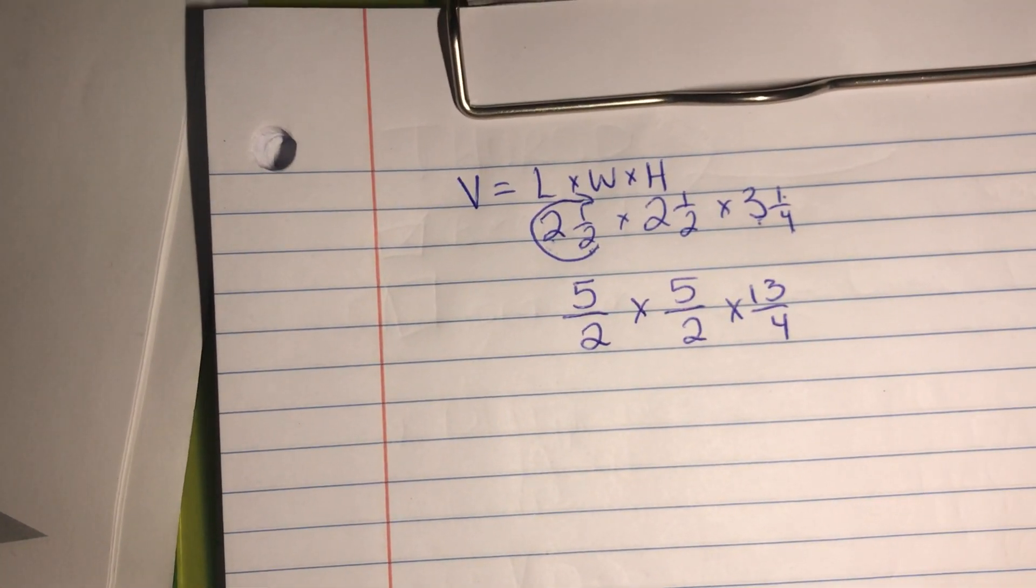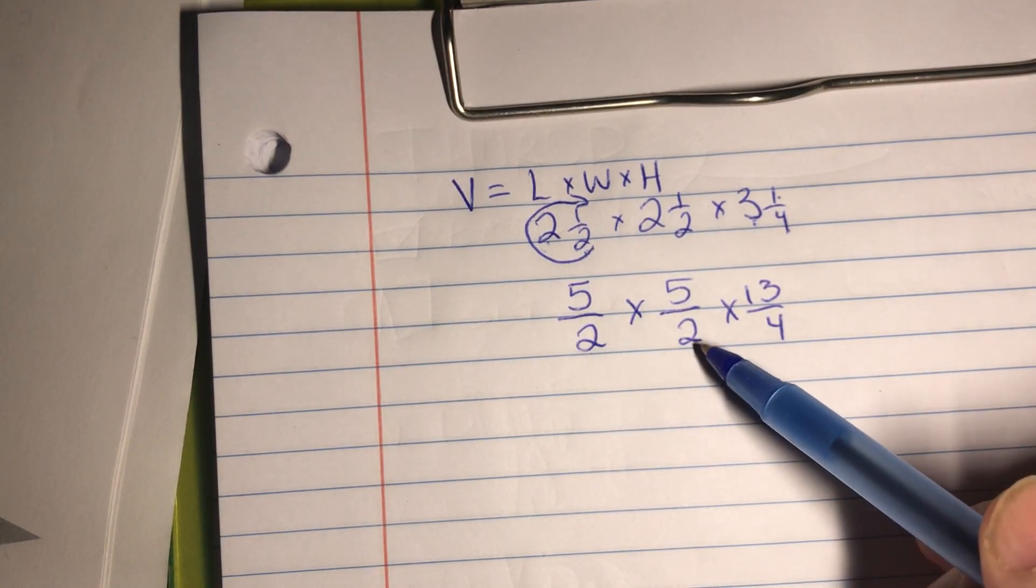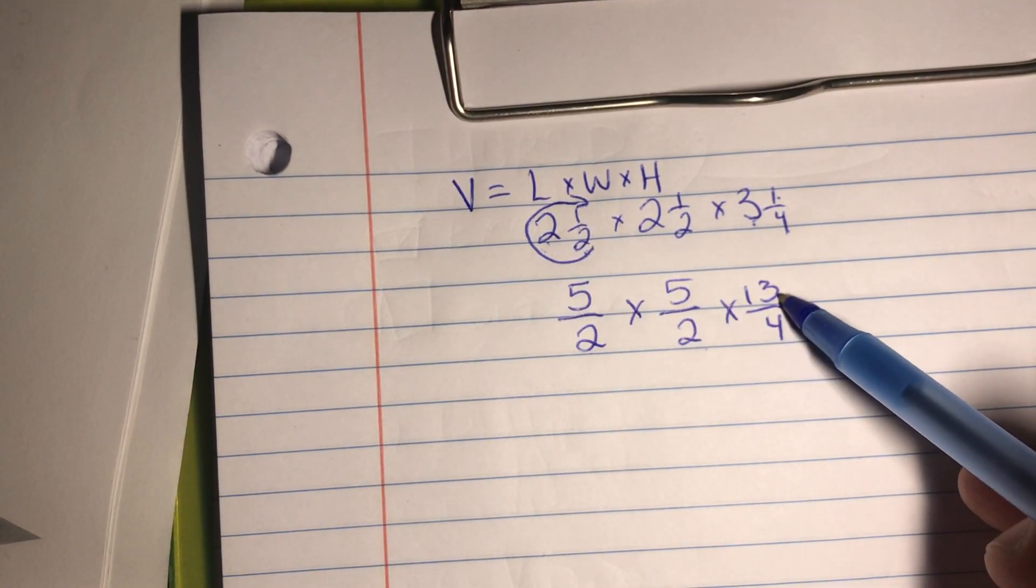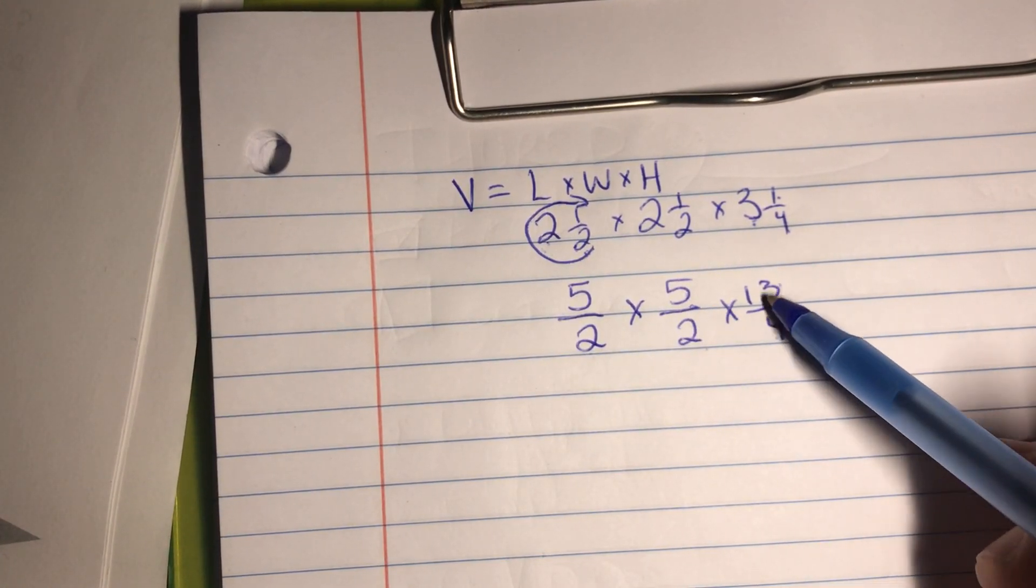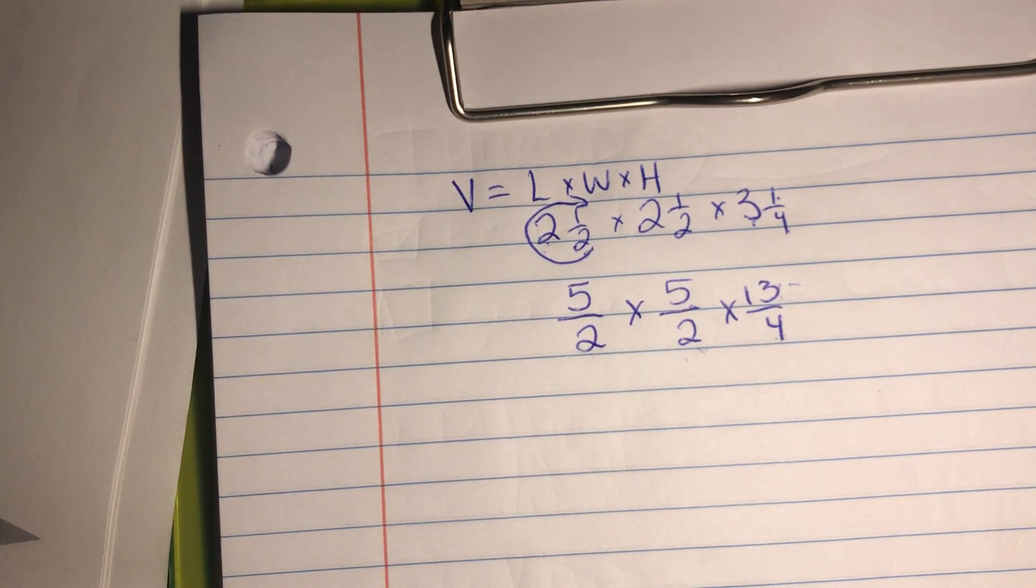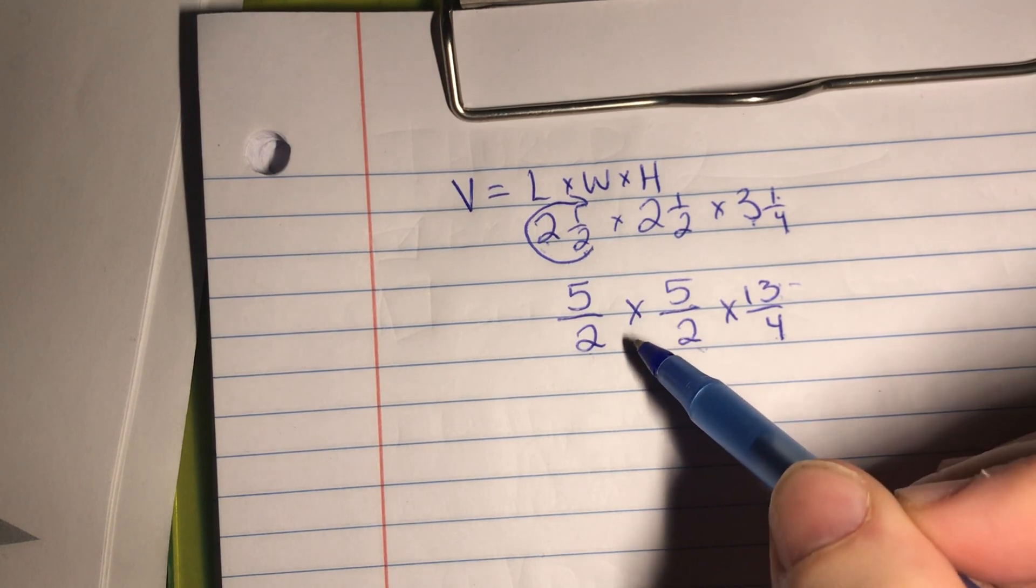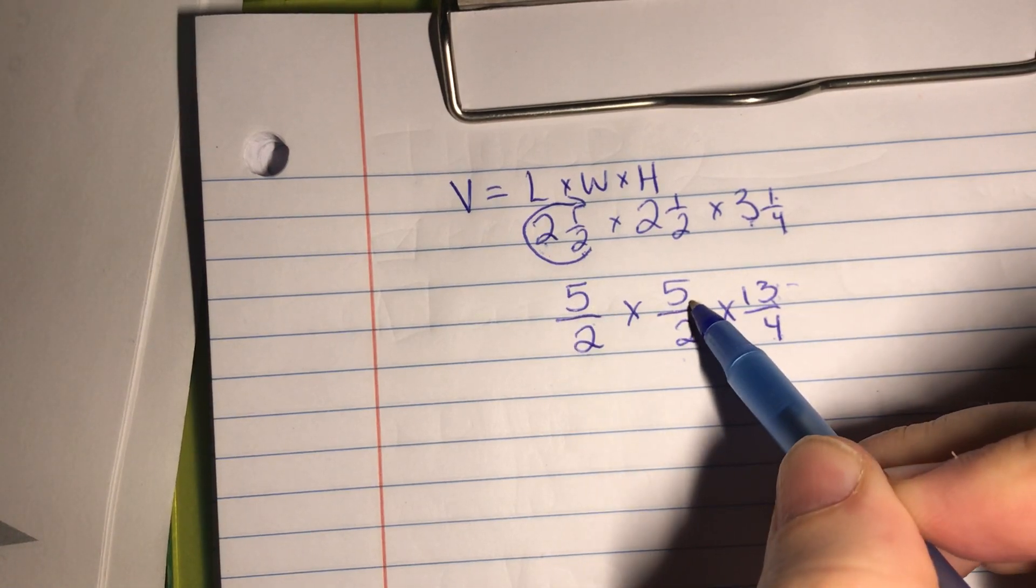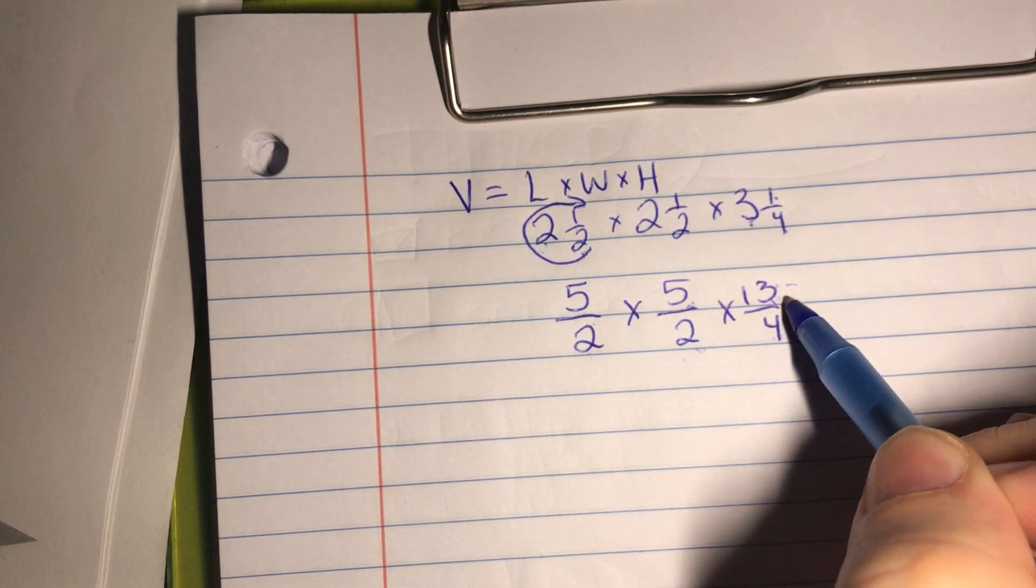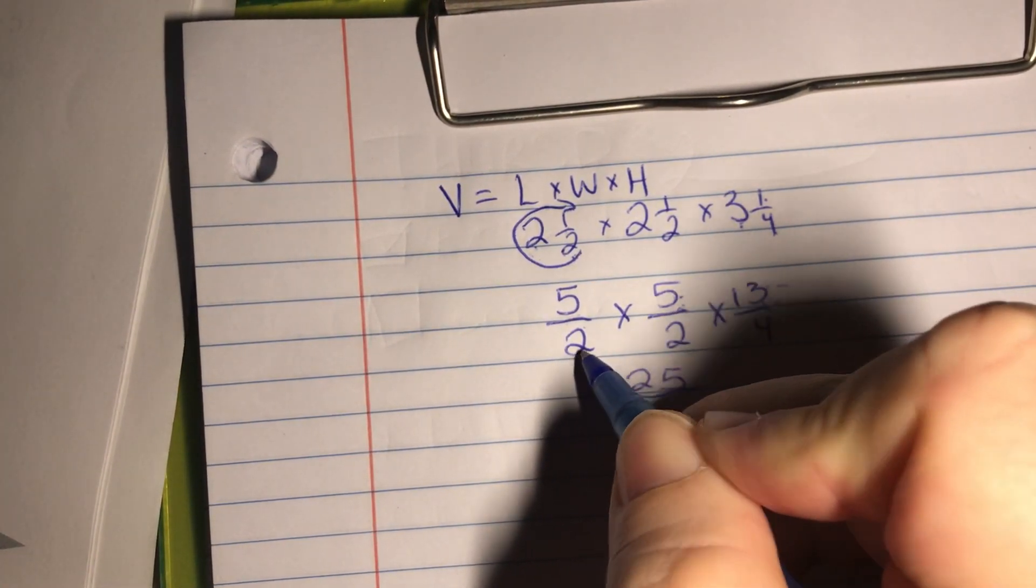Now anytime I multiply fractions, I always look for a way to first simplify. Unfortunately, I can't simplify. None of the denominators can simplify with any of the numerators. Two won't go into five and two goes into four so we know that four will go into five and four will go into thirteen. So we're going to have to multiply all the numerators and all the denominators. Now if you are uncomfortable with multiplying this many at one time, that's good. That's completely fine. I would multiply two at a time instead of trying to multiply all three at a time. Five times five is twenty-five. And two times two is four.